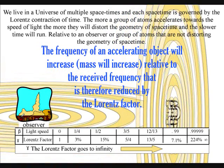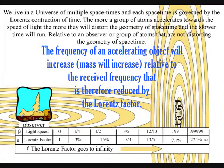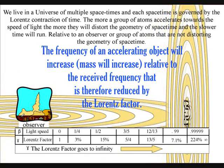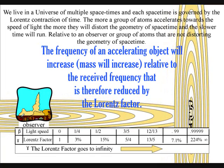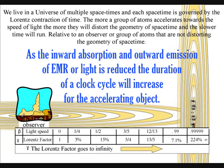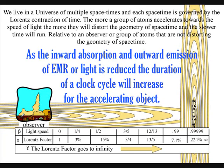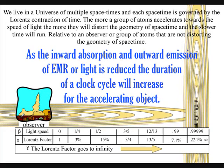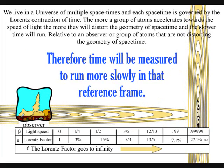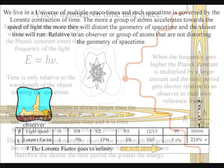The frequency of an accelerating object will increase relative to the received frequency, that will therefore be reduced by the Lorentz factor. As the inward absorption and outward emission of electromagnetic radiation is reduced, the duration of a clock cycle will increase for the accelerating object, and time will be measured to run more slowly in that reference frame.